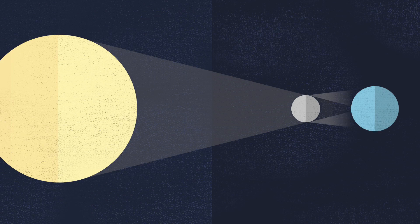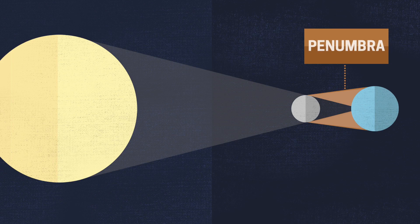When this happens, the outer shadow that the Moon casts on the Earth is called the penumbra, and the inner shadow is called the umbra.